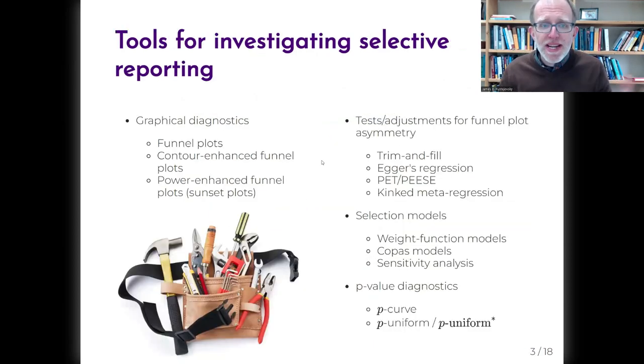A meta-analyst might say, we've already got tons of tools available for investigating selective reporting. Why do we need more? We've got graphical diagnostics like funnel plots, tests, and adjustment methods like PET-PEESE, selection models, p-value diagnostics like p-curve and p-uniform. The problem is very few of these methods have been extended to handle dependent effect sizes, which are a really common feature of meta-analytic data.